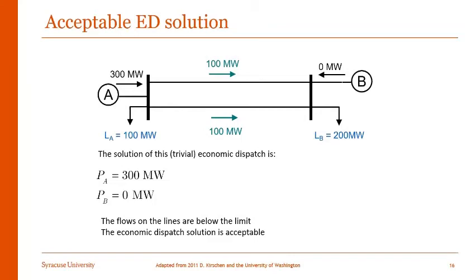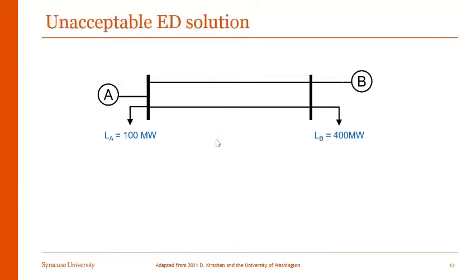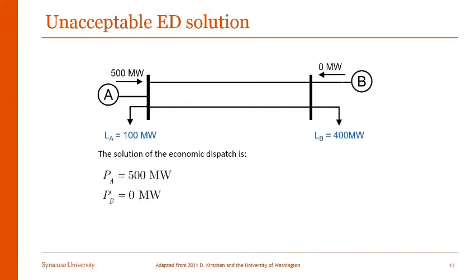We'll see what happens when load increases and we still continue generating from generator A. In the next picture, load at bus B increases from 200 to 400. Now the solution of economic dispatch becomes 500 megawatts at generator A and 0 megawatts at generator B, again following the rule that A is less expensive and B is more expensive. In this case, we see the line power flows are both 200 megawatts.